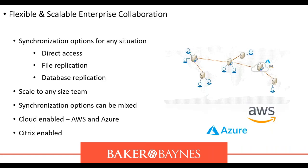Flexible and scalable enterprise collaboration: synchronization options for any situation, including direct access, file replication, and database replication. The solution can scale to any size team, synchronization options can be mixed, it is cloud-enabled on AWS and Azure, and Citrix-enabled. Many people can work on the same server, connecting a main server to work files, with certain people working in different departments on their own files.